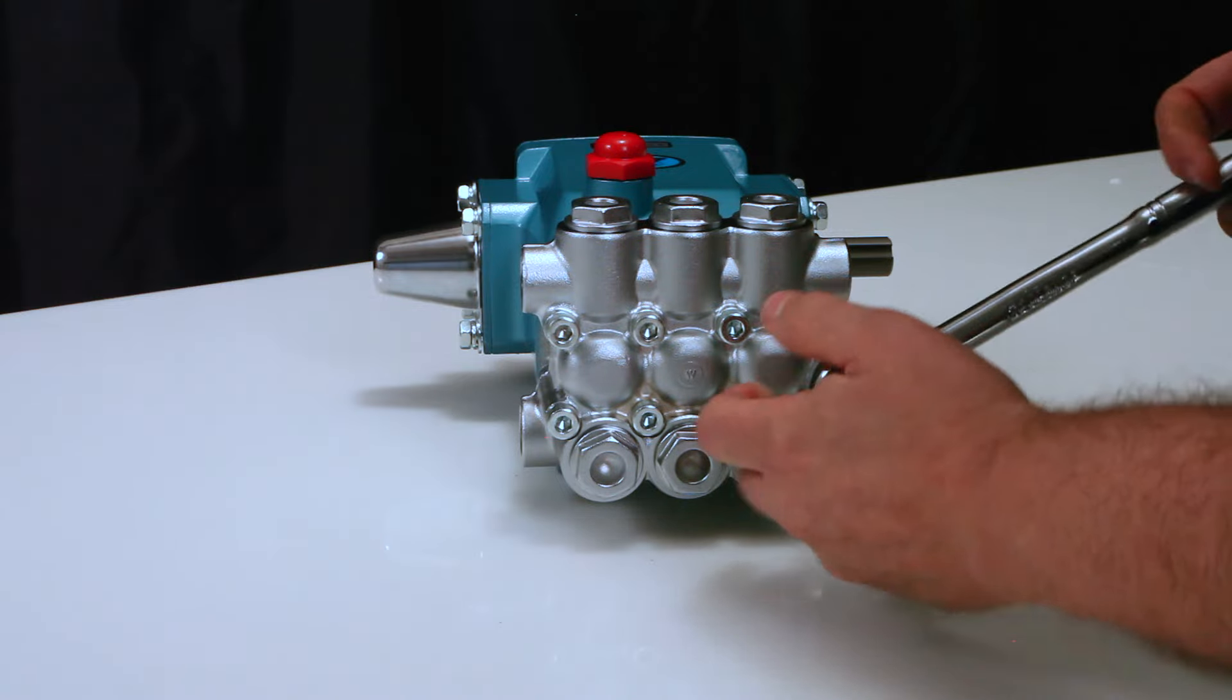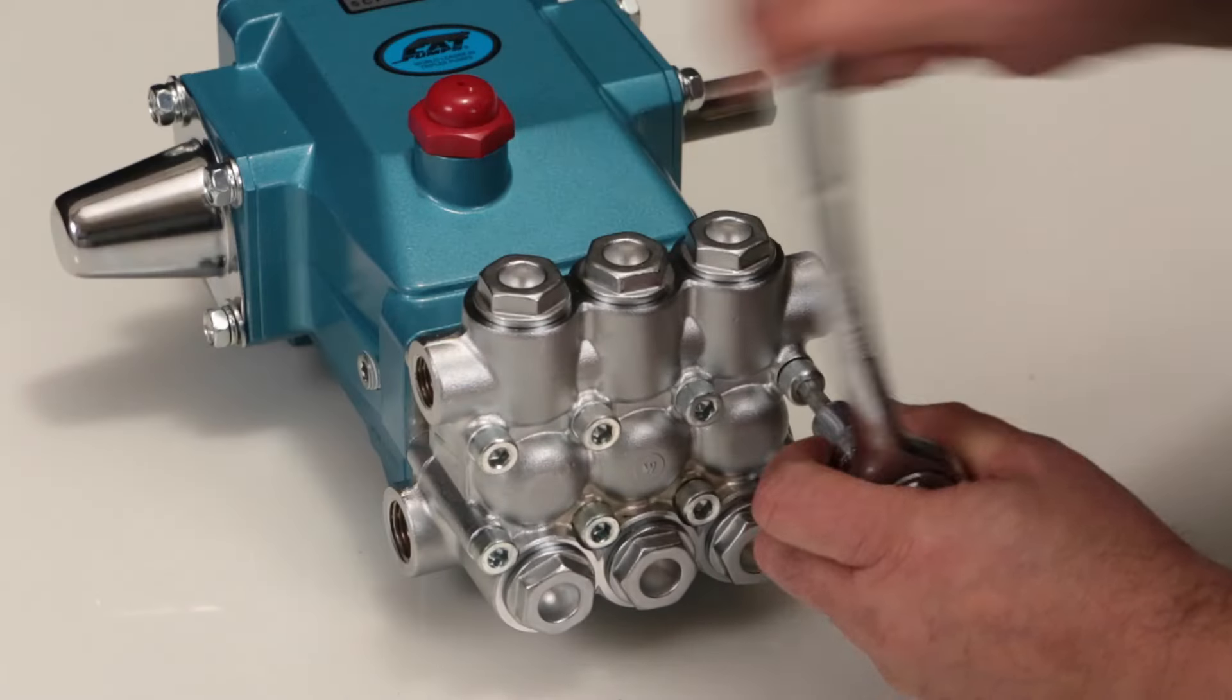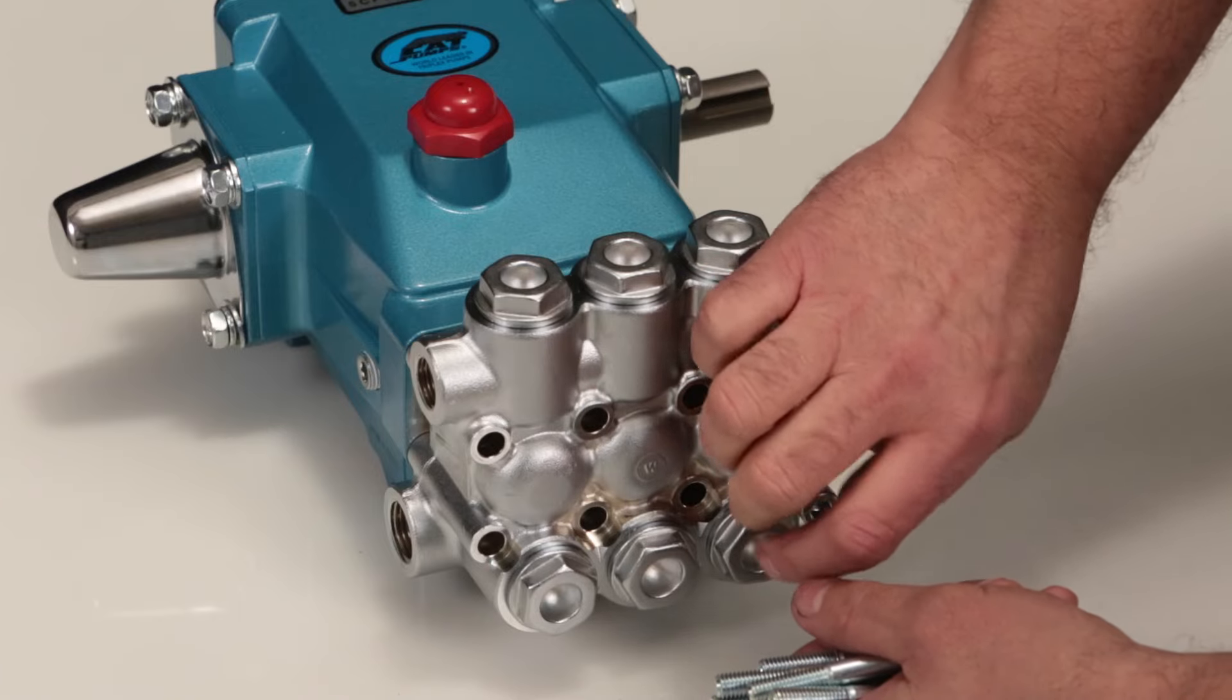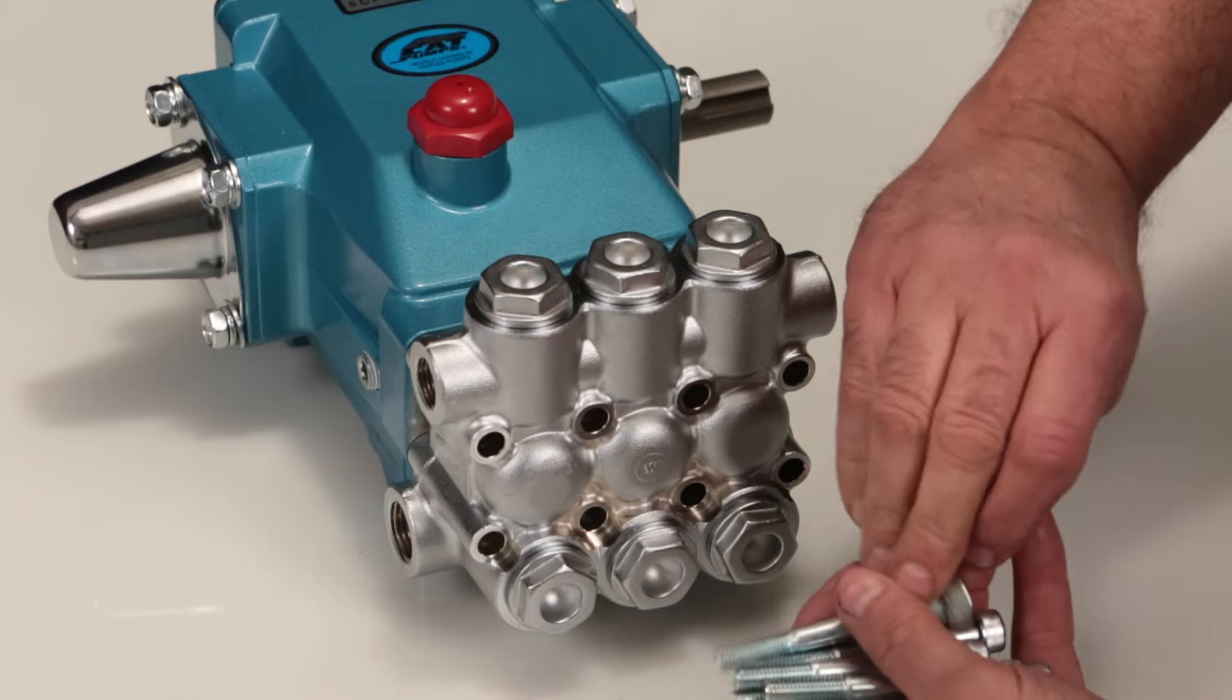To service or repair the seals, begin by removing the manifold. The manifold can be removed using a 6mm Allen wrench to remove the eight hex socket head screws.